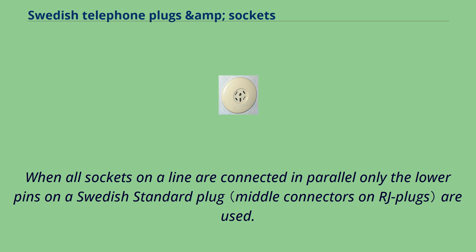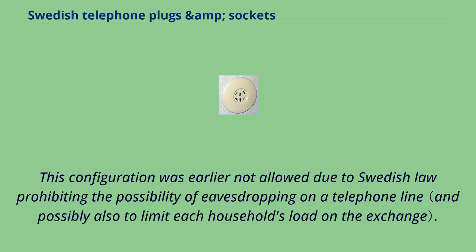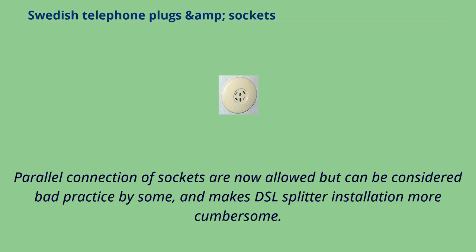When all sockets on a line are connected in parallel, only the lower pins on a Swedish standard plug are used. This configuration was earlier not allowed due to Swedish law prohibiting the possibility of eavesdropping on a telephone line. Parallel connection of sockets is now allowed but can be considered bad practice by some, and makes DSL splitter installation more cumbersome.